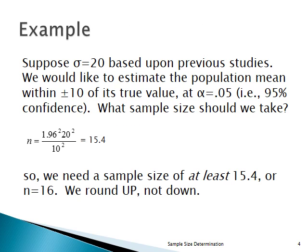Here's a simple problem. Suppose we know that σ, the population standard deviation, is 20 based on previous studies. We want to estimate the population mean, that's a confidence interval we're going to construct. We want to be within plus or minus 10 of its true value, so we want the margin of error to be 10 on both sides. And we're going to use α of 0.05, it's a 95% confidence interval. What sample size should we take?